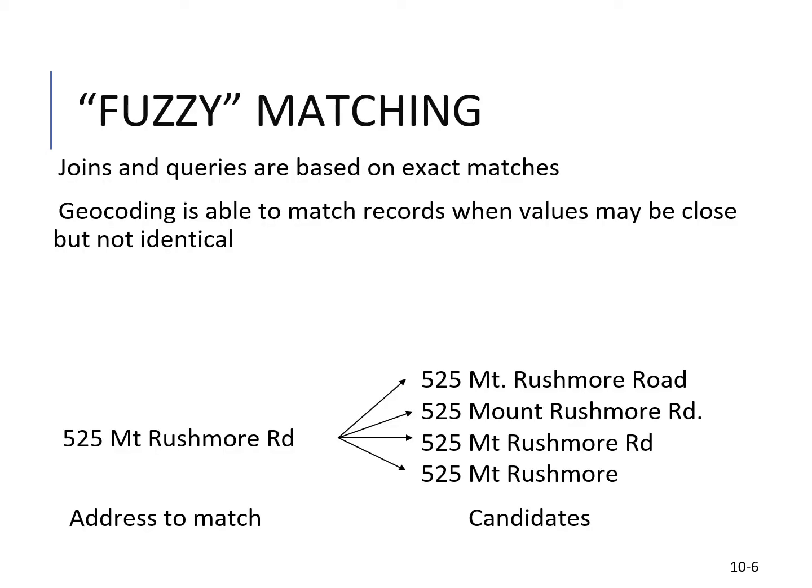Fuzzy matching is when joins and queries are based on exact matches — but geocoding is able to match records where values may be close but not identical. Joins and queries, something we've learned about earlier in this course, are based on exact matches, whereas geocoding can find close or similar matches. There may just be a couple of differences in spelling or punctuation, but it can still match.